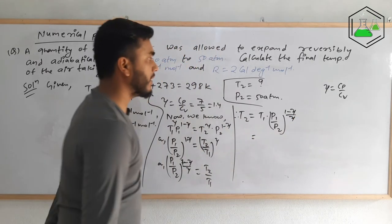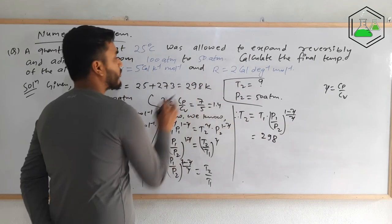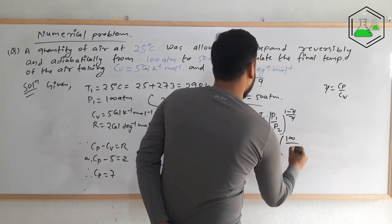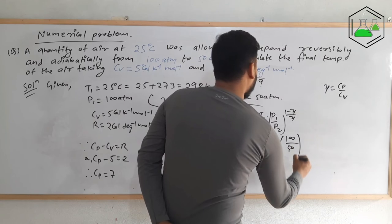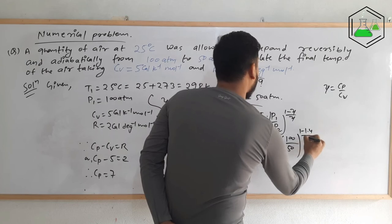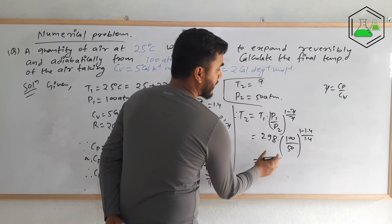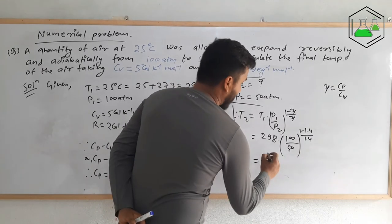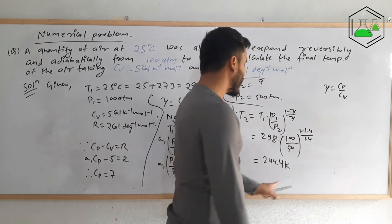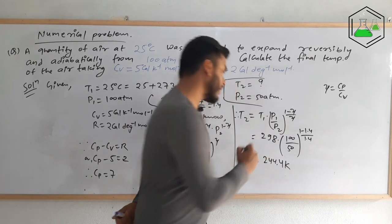Now putting in the values: T1 = 298 K, p1 = 180 atm, p2 = 50 atm, and the exponent (1 − γ)/γ = (1 − 1.4)/1.4. Calculating this on a calculator gives T2 = 244.4 K. So the final temperature of the system is 244.4 K. This type of numerical problem is frequently asked in examinations.